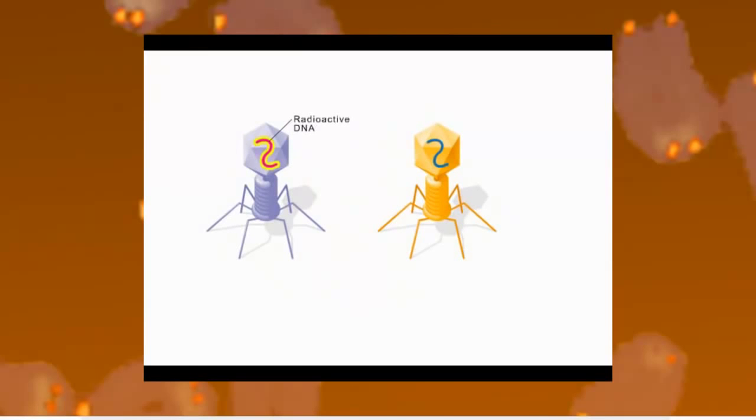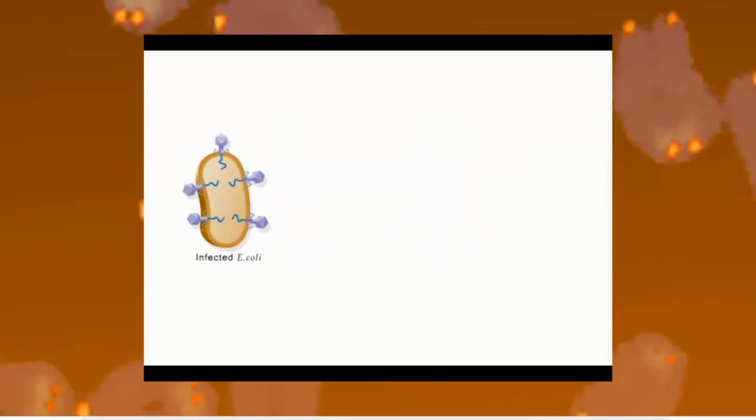For their experiment, the scientists prepared T2 phages that either had radioactive DNA or radioactive proteins. To make the components radioactive, Hershey and Chase infected E. coli with T2 and grew the bacterial cells in two different culture media, one containing the radioactive isotope phosphorus-32, and the other containing the radioactive isotope sulfur-35.